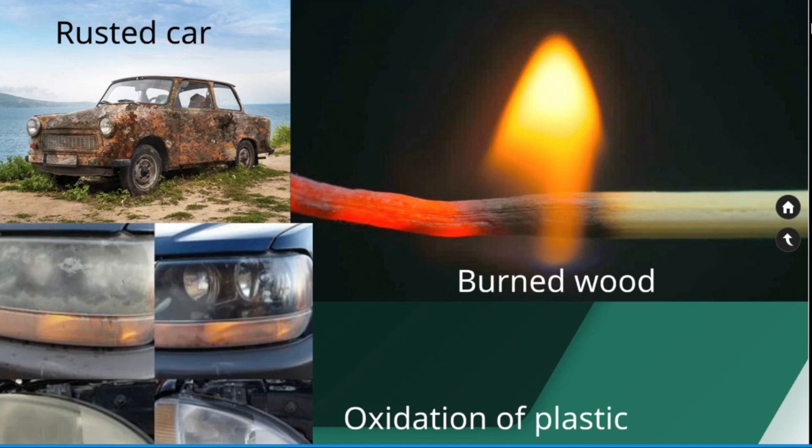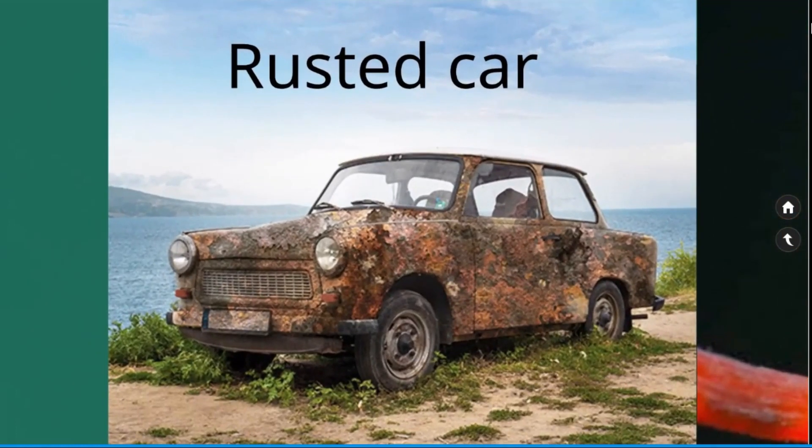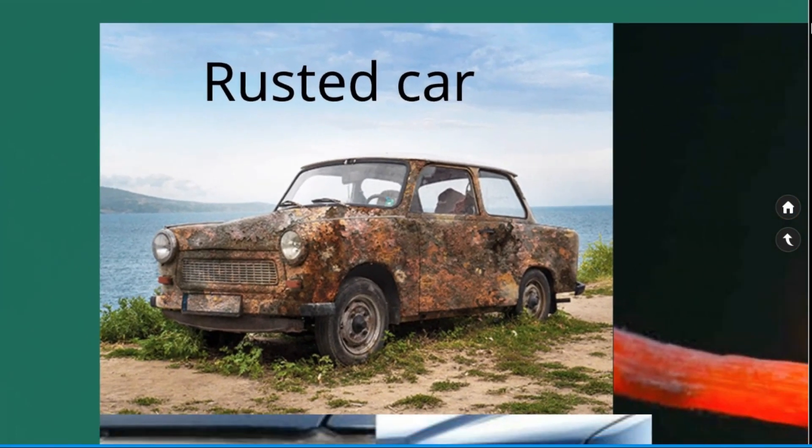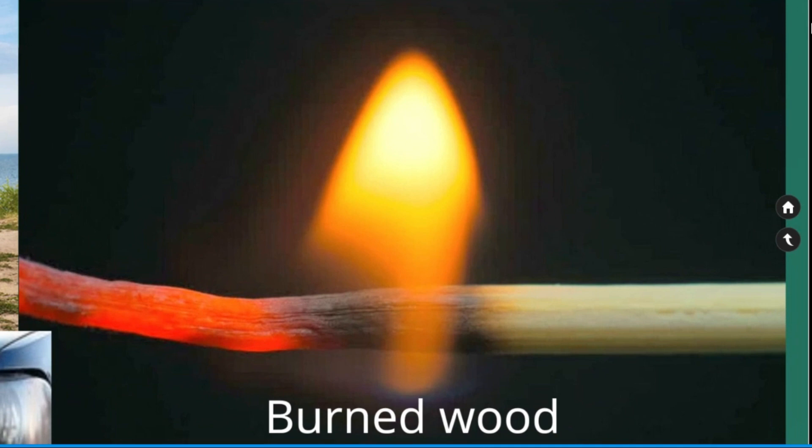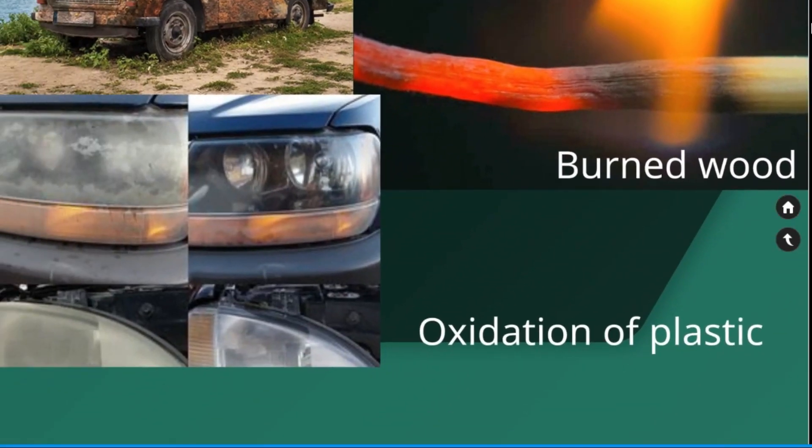Here are some of the examples of chemical property change. You can see a rusted car which undergoes corrosion. A burned wood. You can see that after burning the wood is completely changed to a different material. Oxidation of plastic. Here you can see the oxidation of plastic when a plastic material exposed to weather, sunlight, or moisture for a longer period of time.